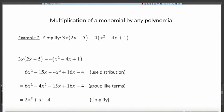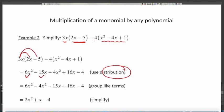Here's another example: we are multiplying 3x (a monomial) by (2x - 5), which is a binomial — bi means two terms. And -4 should be multiplied by a trinomial. We use the same distribution method. Distribute 3x into the bracket: 3x × 2x = 6x², and 3x × (-5) = -15x.